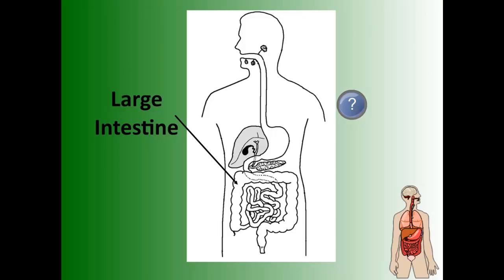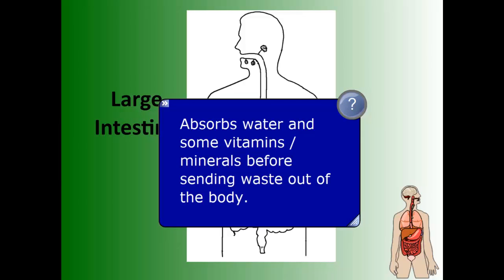Once food passes through the small intestine, it enters the large intestine. The small intestine was great for absorbing nutrients, but the large intestine is where water is absorbed. A few vitamins and minerals are also absorbed here before waste is set out to be expelled. Basically, it's the body's last attempt to absorb anything it might need before expelling whatever is left as solid waste.